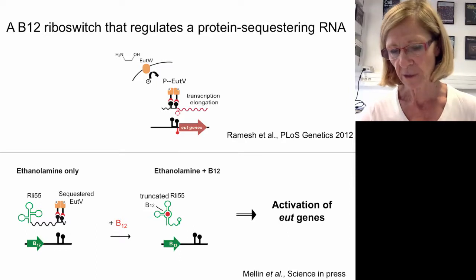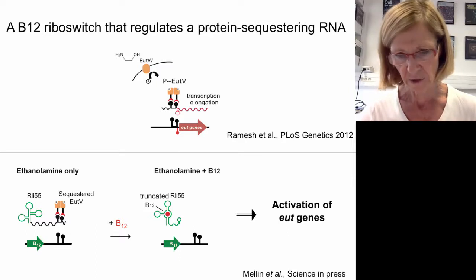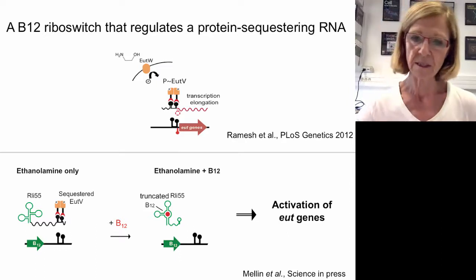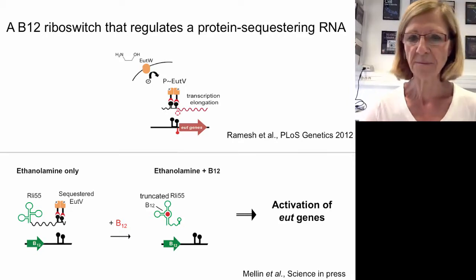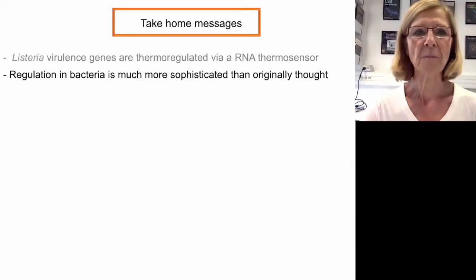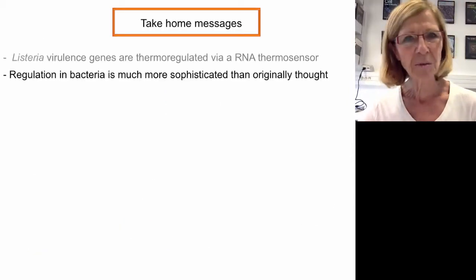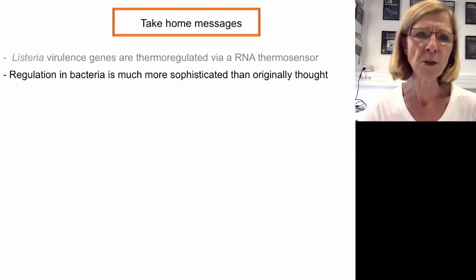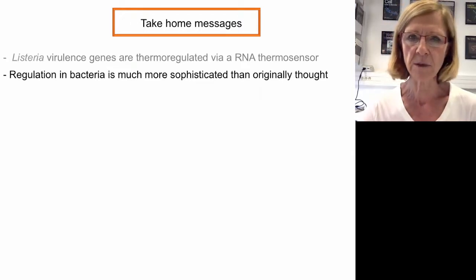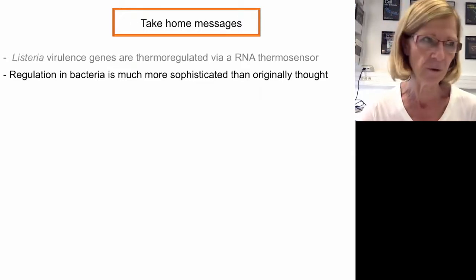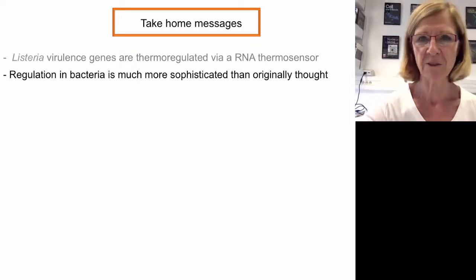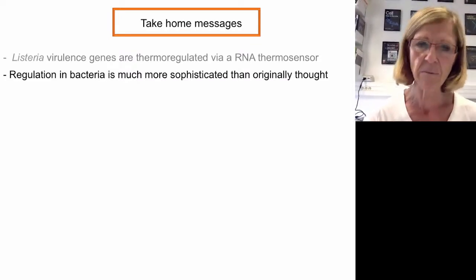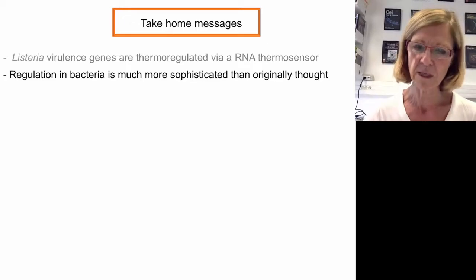We have shown that the utilization of ethanolamine is critical for pathogenesis. The second take-home message is that regulation in bacteria is much more sophisticated than originally thought by Jacob and Monod when they presented their operon model, and I think there are more surprises to come.